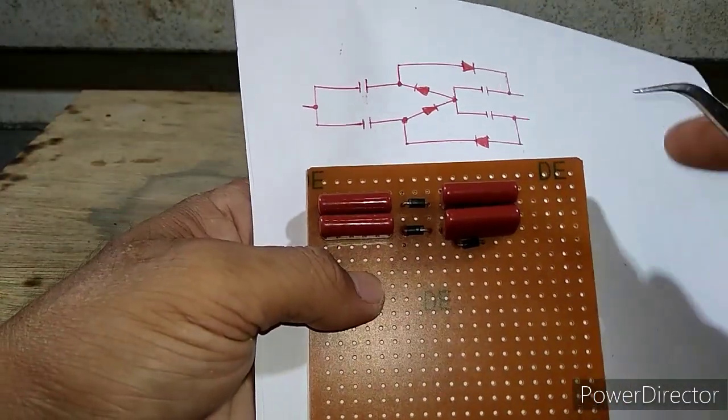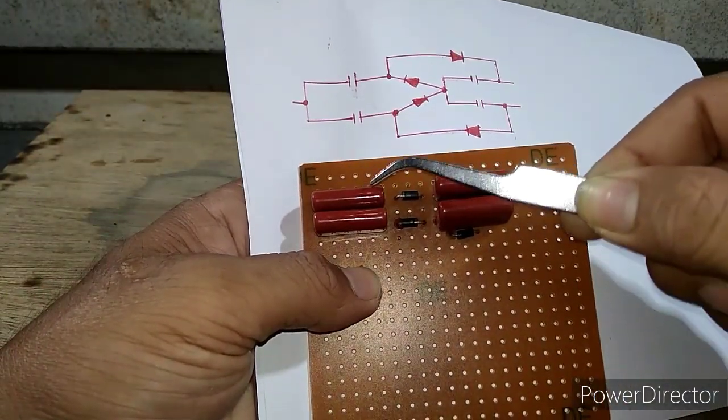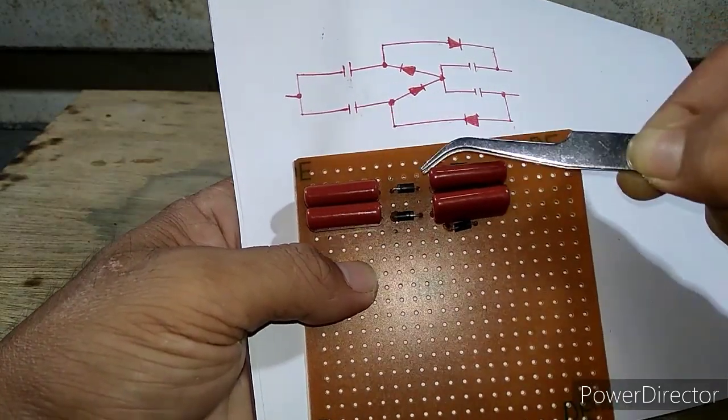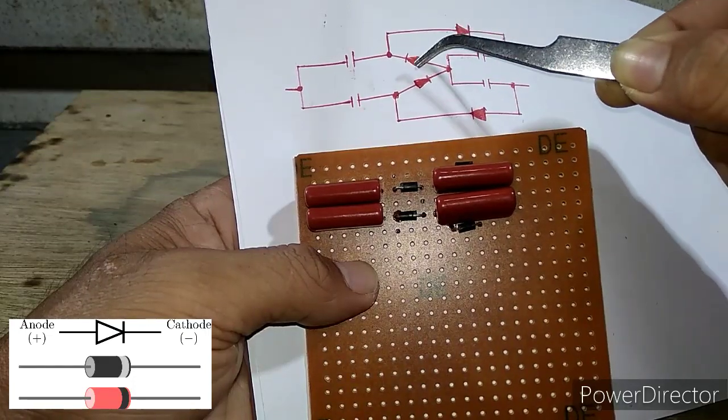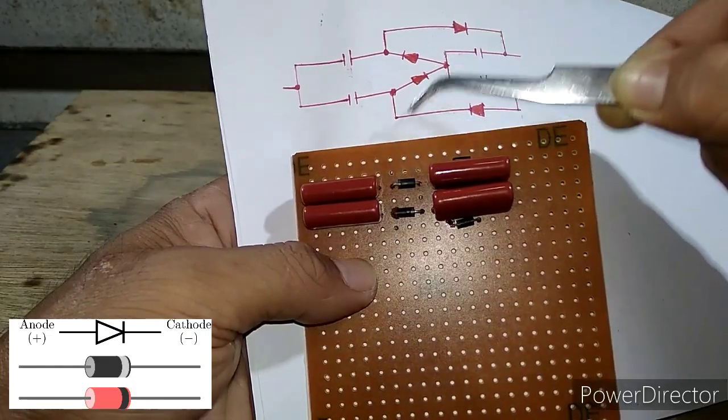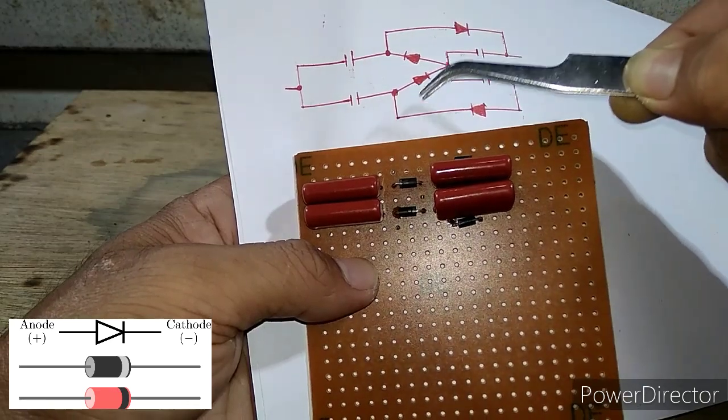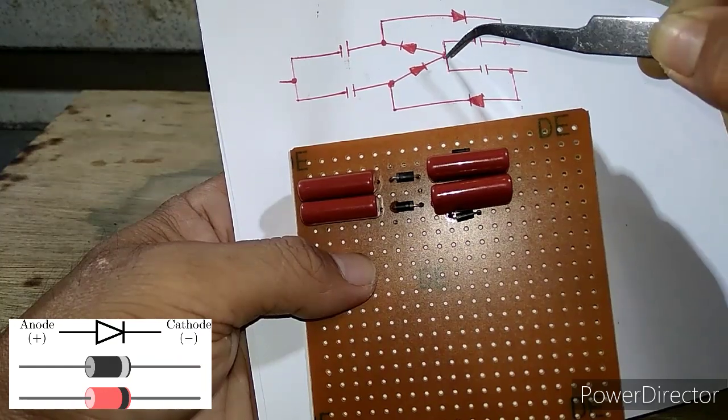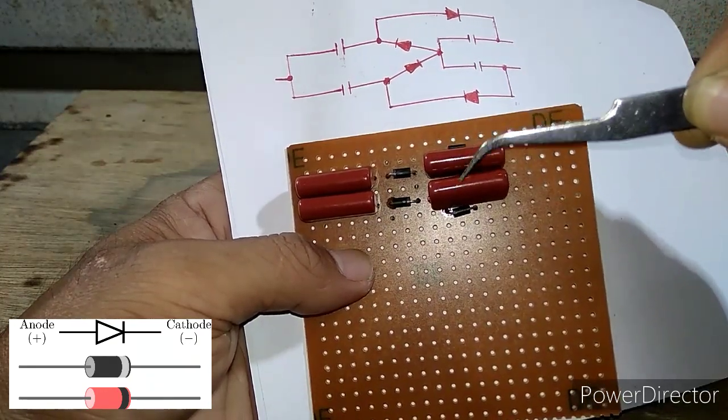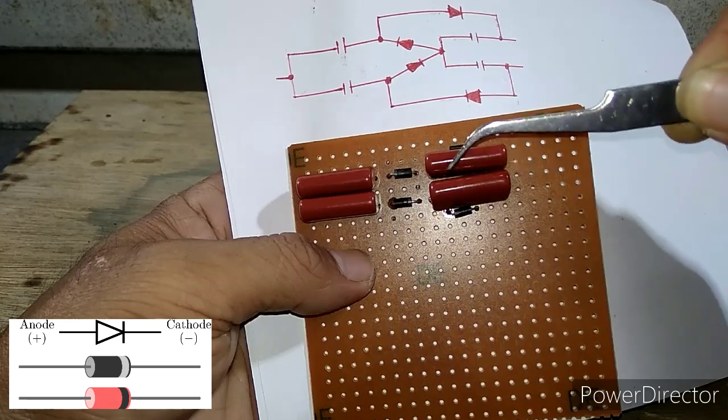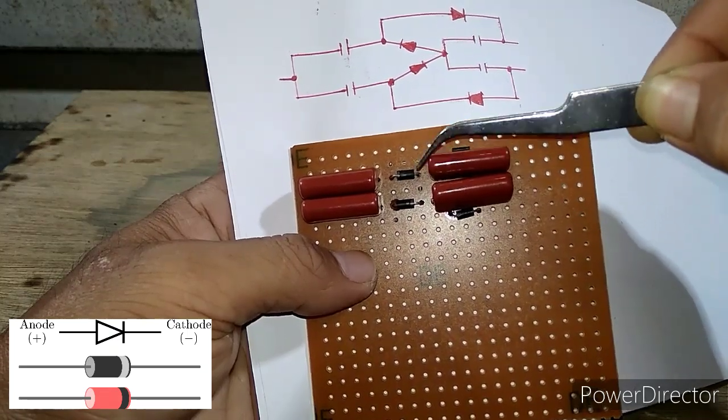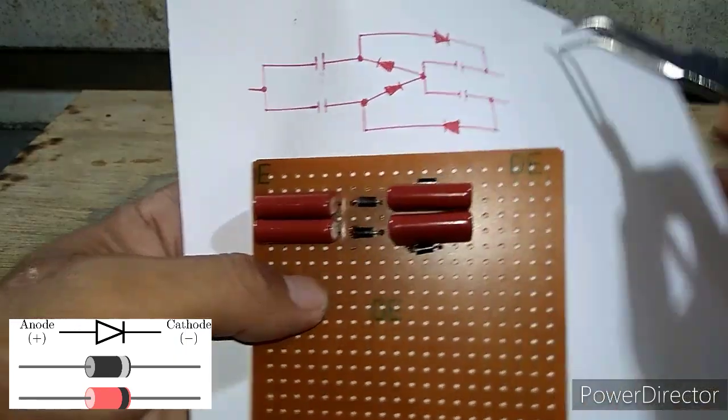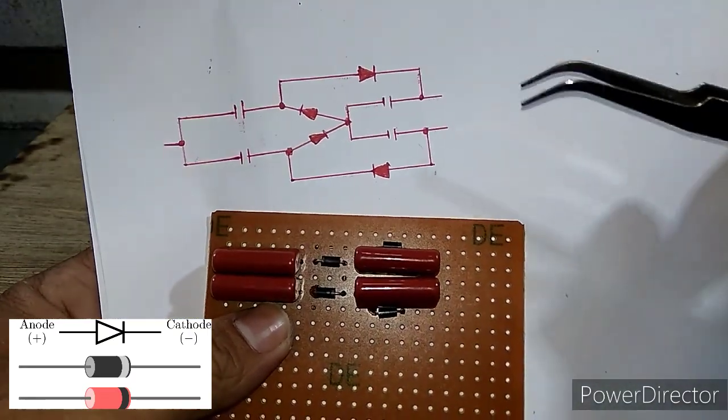Disini saya coba jelaskan. Untuk yang ini kapasitor milar - milar 1 dan milar 2, dioda 1 dan dioda 2. Untuk dioda 1, kaki katoda ke salah satu kaki milar 1, dan kaki anoda ke salah satu kaki milar 3. Dan dioda 2, kaki anoda ke salah satu kaki milar 2, dan katoda ke salah satu kaki milar 4.